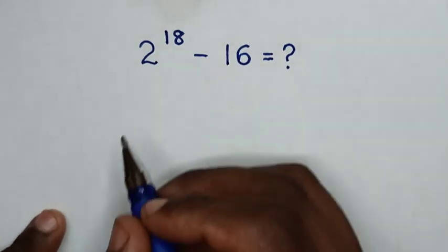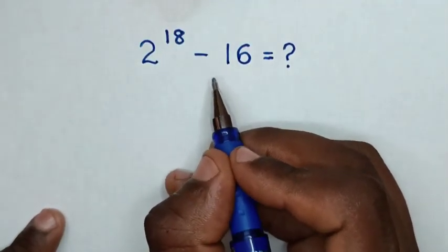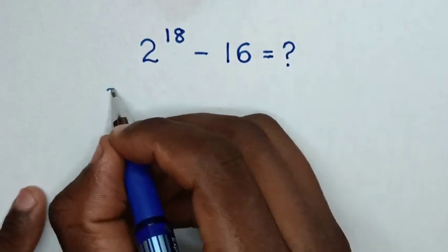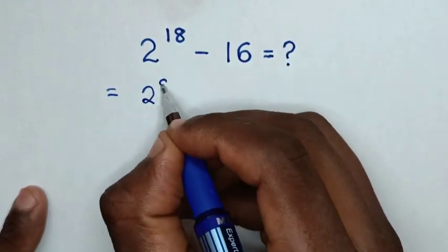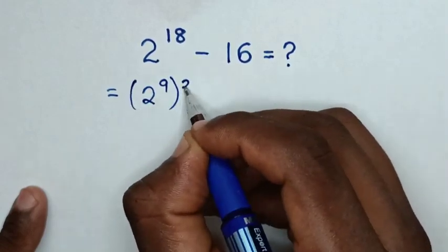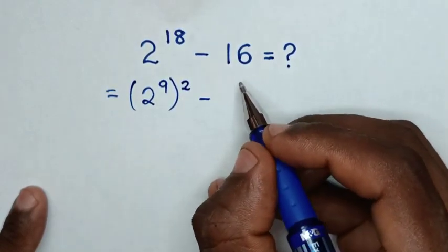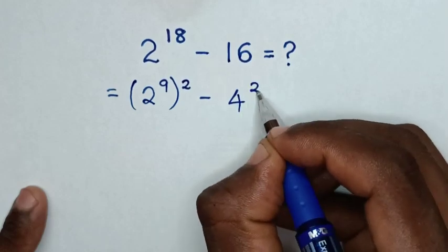Hello. How to solve 2^18 minus 16. This equals (2^9)^2 minus 4^2.